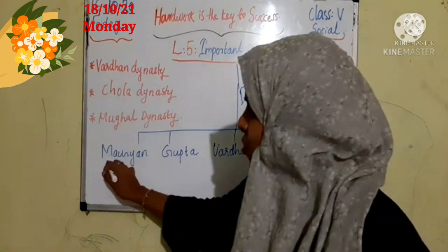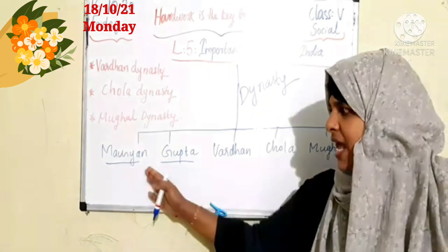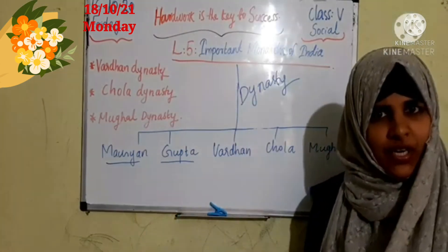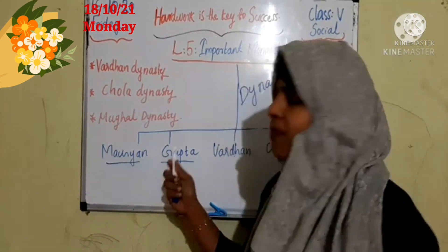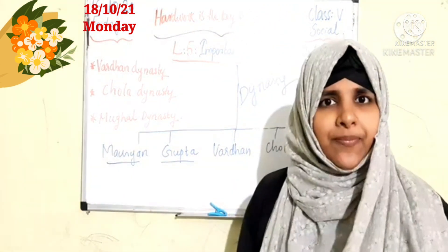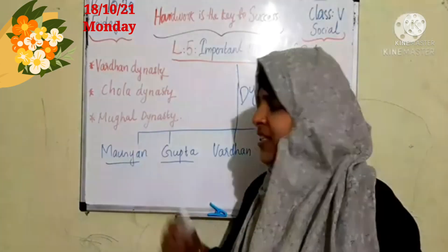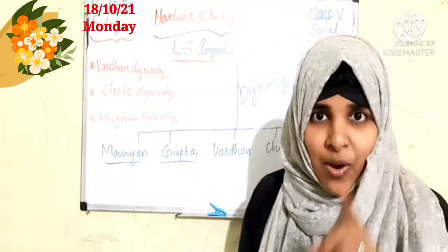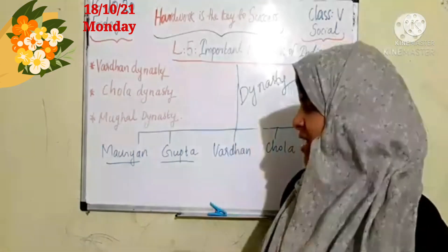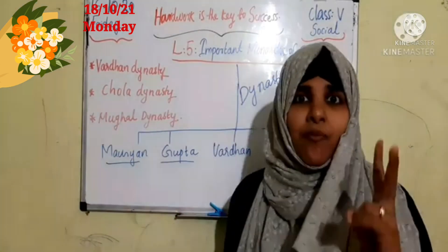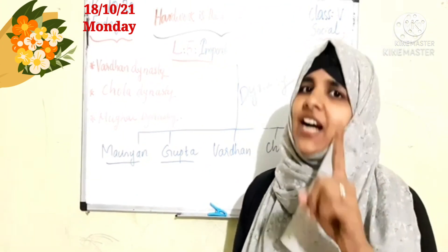But these two only we discussed in detail — Mauryan and Gupta. Did you memorize, children? Very good. So who were the rulers of Mauryan dynasty? The rulers were Chandragupta Maurya and Ashoka.